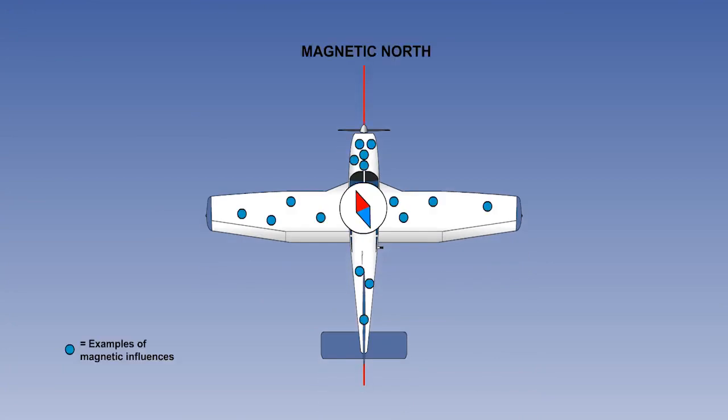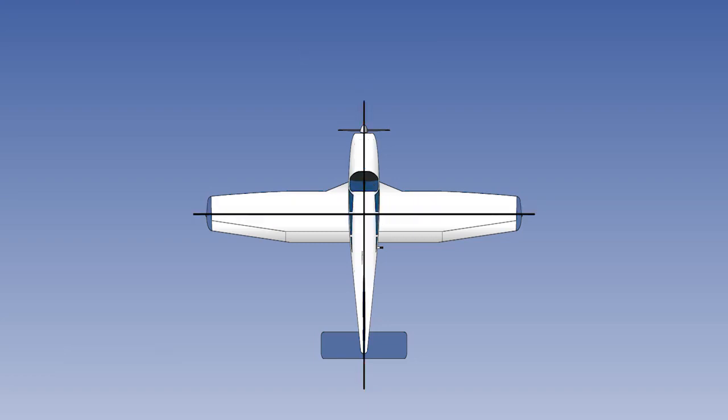Unfortunately, magnetic influences on the aircraft's magnetic compass are distributed all over the aircraft. Individually, they would be hard to locate and identify, so the solution is not necessarily to identify them, but merely to establish their total effect on the aircraft's magnetic compass reading. The total effect can be split into a longitudinal component and a lateral component.